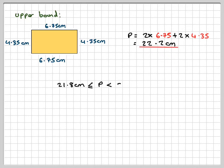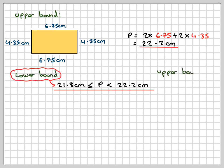So the perimeter will be between 21.8 centimeters and 22.2 centimeters. This is the lower bound and this is the upper bound. This has been a video to show you how to find the lower and upper bounds of a perimeter of a rectangle that has been measured correct to the nearest millimeter. I hope you've understood and I thank you very much for watching.